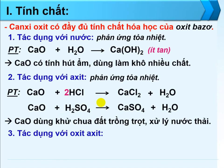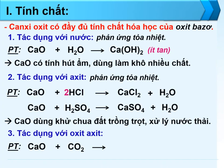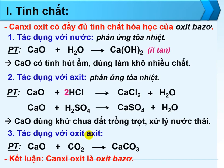Tính chất thứ 3: Tác dụng với oxit acid. Để một mẫu nhỏ canxi oxit trong không khí ở nhiệt độ thường, canxi oxit sẽ hấp thụ khí CO₂ và tạo thành canxi cacbonat. Oxit bazơ tác dụng với oxit acid tạo thành muối. Vì vậy, canxi oxit sẽ giảm chất lượng nếu lưu giữ lâu ngày trong tự nhiên. Canxi oxit có đầy đủ 3 tính chất hóa học của một oxit bazơ, vậy kết luận rằng canxi oxit là một oxit bazơ.